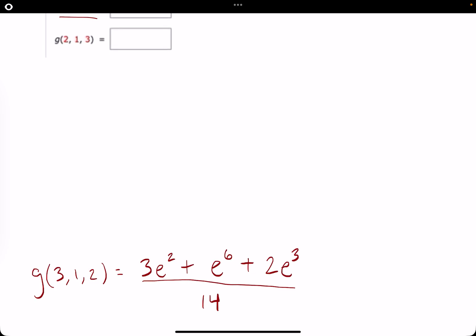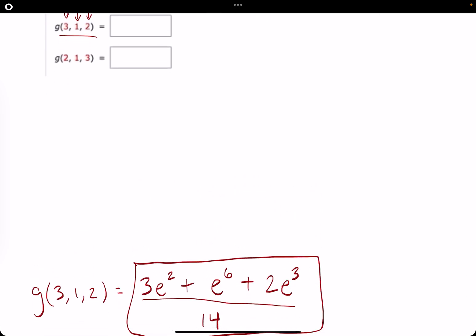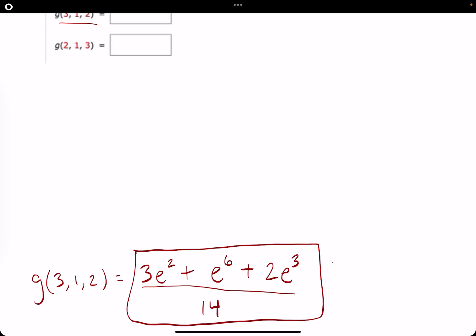And I think you'll just want to submit it like this if they want an exact answer. Otherwise, you'll just plug this into Desmos and get some sort of decimal, maybe around to two decimal places. They don't specify. So this will be the first answer.